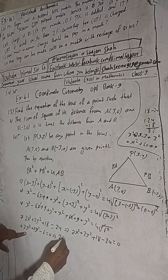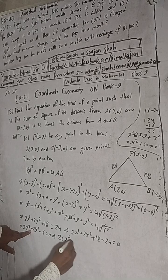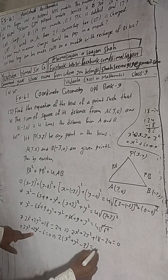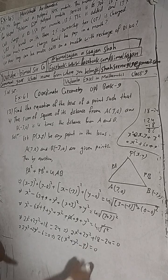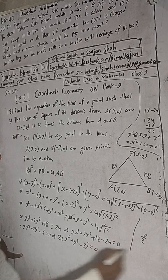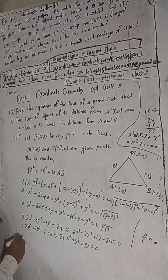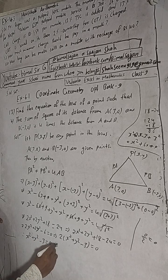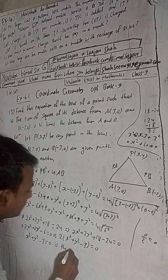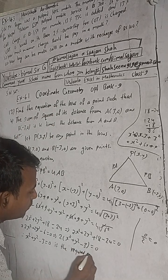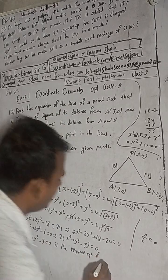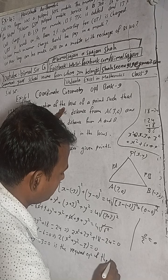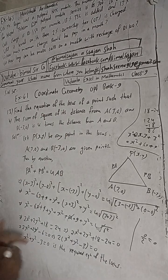Taking 2 as common factor: 2(x² + y² - 3) = 0. Dividing both sides by 2: x² + y² - 3 = 0. Therefore x² + y² - 3 = 0 is the required equation of the locus.